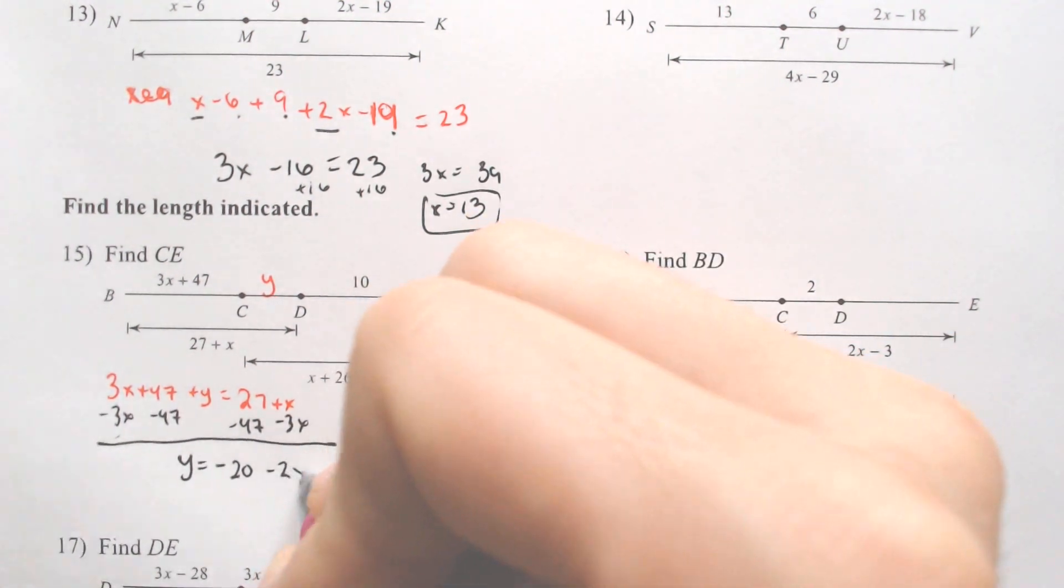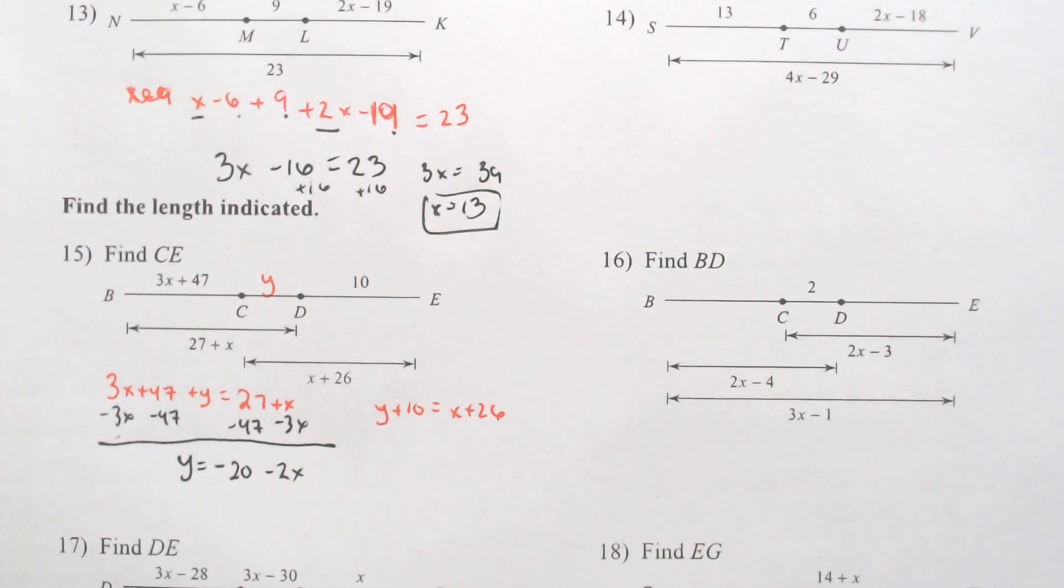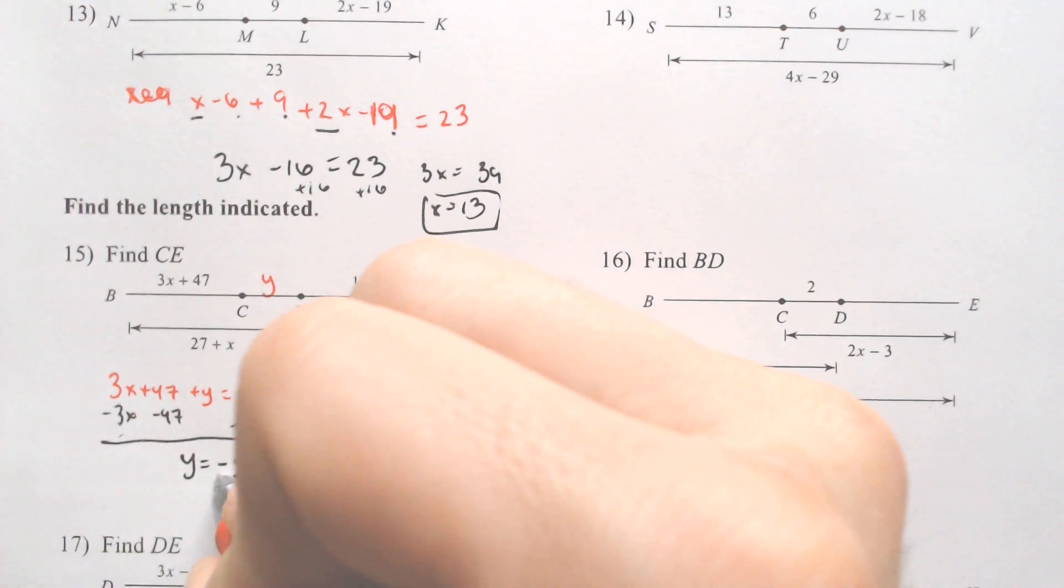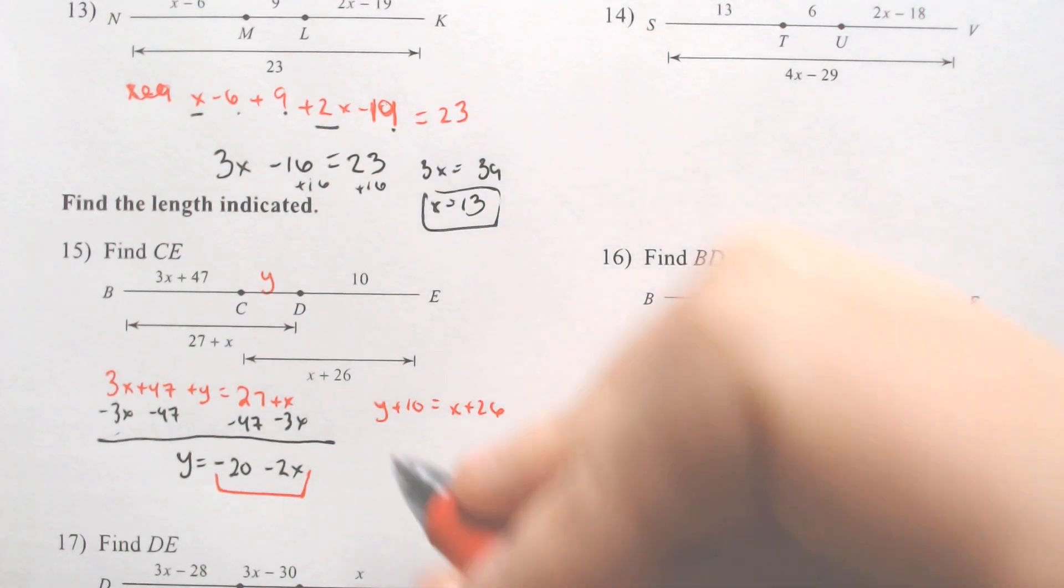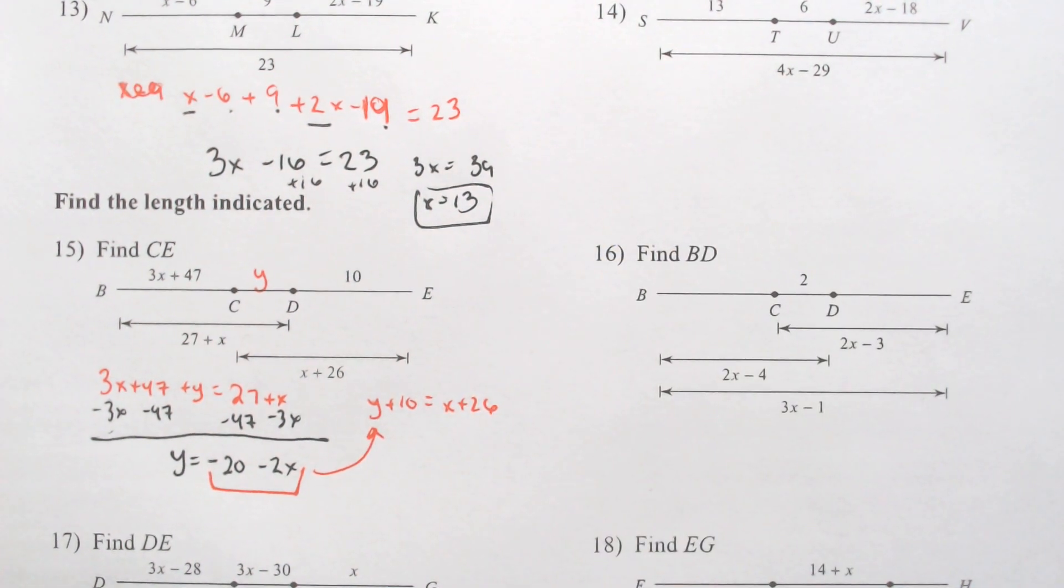Y would equal 27 minus 47 equals negative 20. X minus 3X equals negative 2X. Because we know what Y is equal to, Y equals negative 20 minus 2X, you can substitute that in.